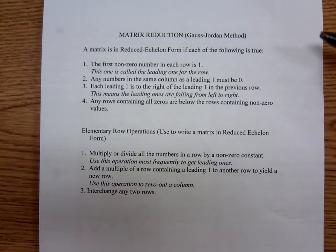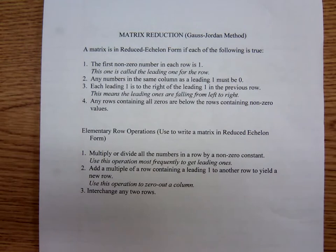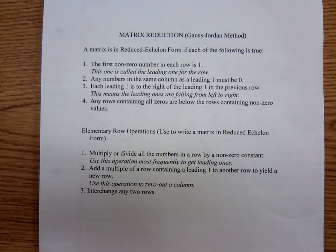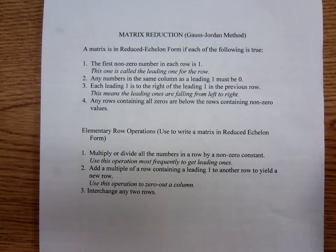Each leading one is to the right of the leading one in the previous row, meaning the leading ones are falling from left to right. And finally, any rows containing all zeros are below the rows containing non-zero values. That's not saying the last row is all zeros — it's saying that if there's a row of all zeros, it has to be at the bottom of the matrix.